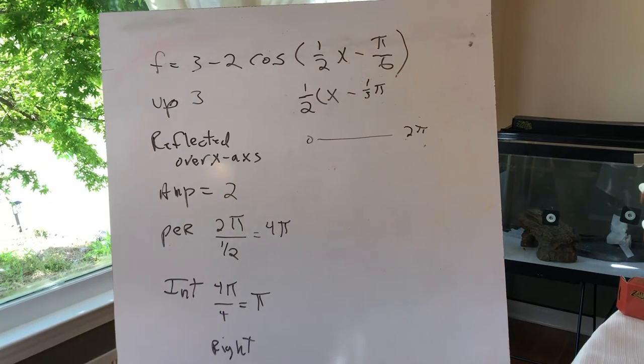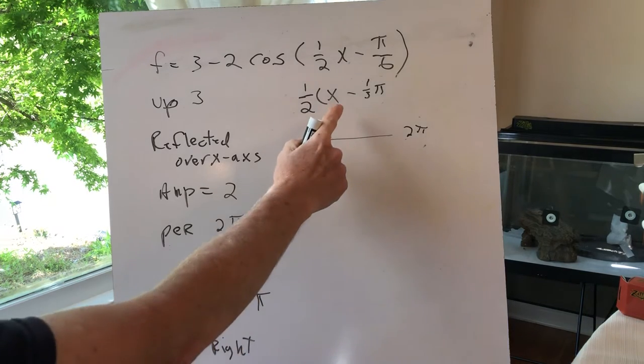You don't have to do it on the calculator. Now I have to shift it left or right. It's negative, which means it's shifted to the right π/3.